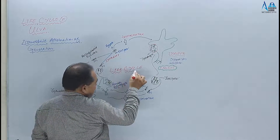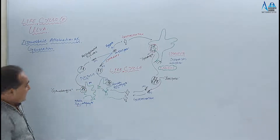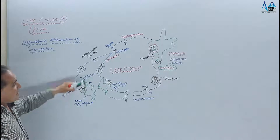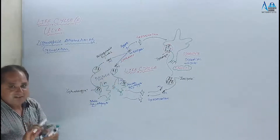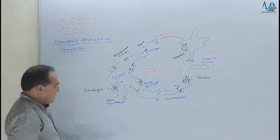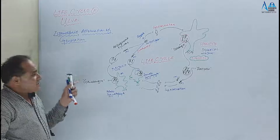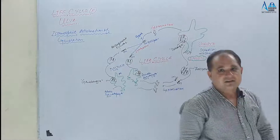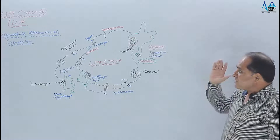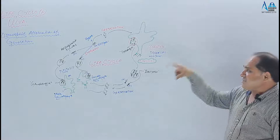Yeh sexual aur asexual life cycle in case of Ulva hai, jisme alternation of generation dekhi. Ise isomorphic alternation of generation isliye kehte hain kyunki inki morphology same hai — male aur female gametophyte aur sporophyte — teeno structure-wise similar hain. Sexual alternates with asexual and vice versa — that's why it is called alternation of generation, and it is isomorphic because morphology is same.